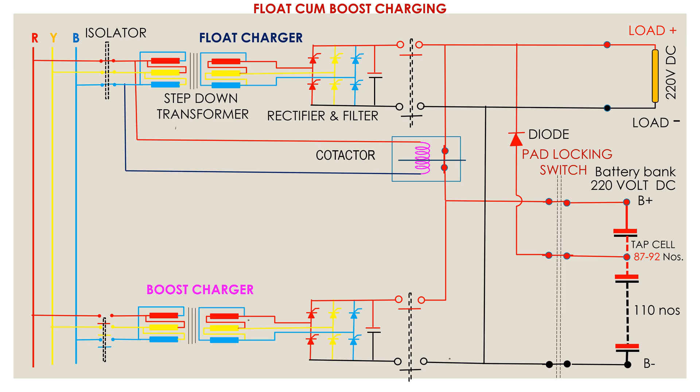The boost charger charges the bank quickly by high charging current as well as higher charging voltage. Nowadays, auto transfer to boost charger and back to float charger is extensively used. The float charging current, when it reaches a certain maximum value beyond its preset value, the boost charger is automatically made on, isolating the float charger.